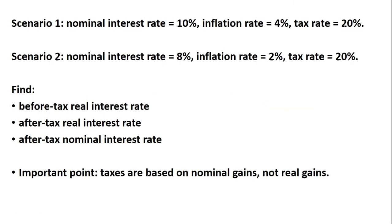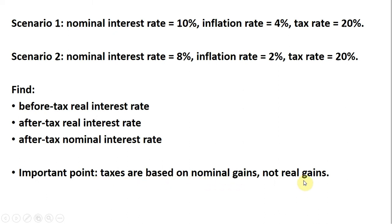Hello, in this video we're going to look at interest rates and taxes. In the first scenario, the nominal interest rate is 10%, the inflation rate is 4%, and the tax rate is 20%. Scenario 2: nominal interest rate 8%, inflation rate 2%, and the tax rate is 20% again. One important point is we're going to assume taxes are based on nominal gains, not real gains, so taxes will be based on the nominal interest rate.